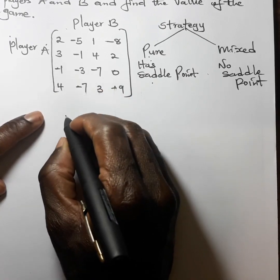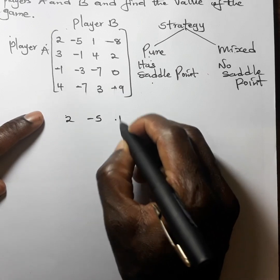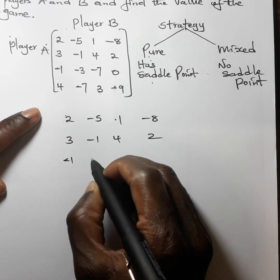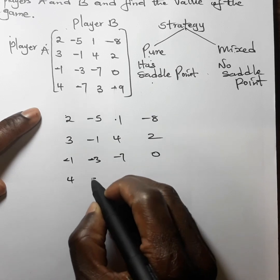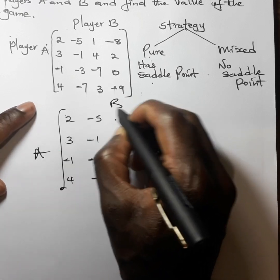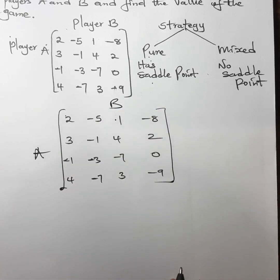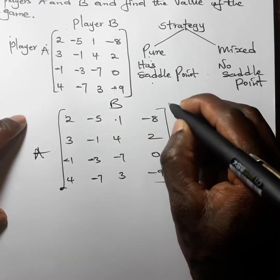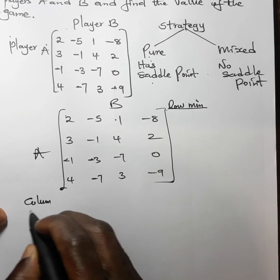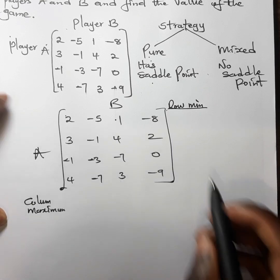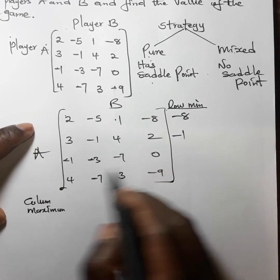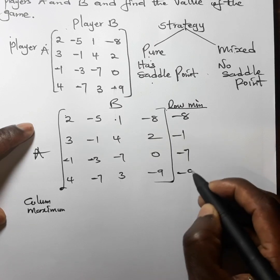Let us set up the matrix. We have: 2, -5, 1, -8; then 3, -1, 4, 2; then -1, -3, -7, 0; then 4, -7, 3, -9. We have player A and player B. The first step to finding the saddle point is to get the row minimum. In the first row the smallest value is -8; in the second row it is -1; in the third row it is -7; and in the fourth row it is -9.